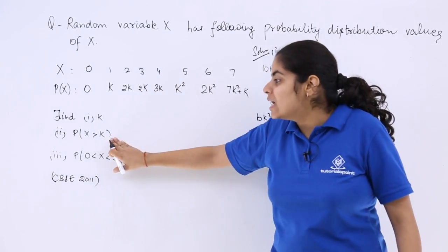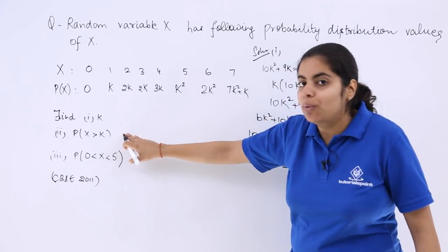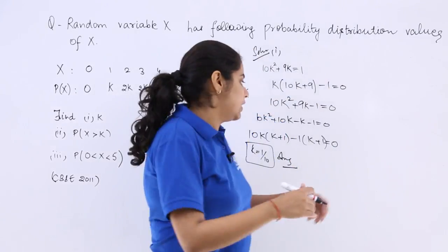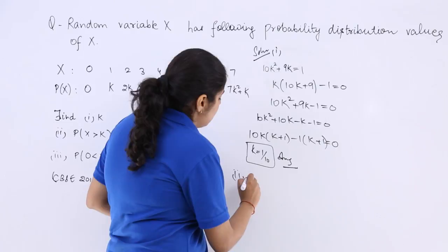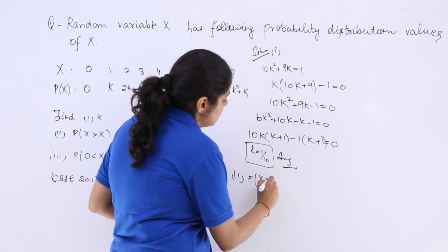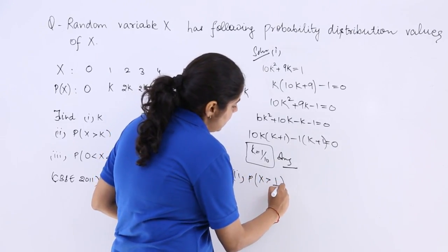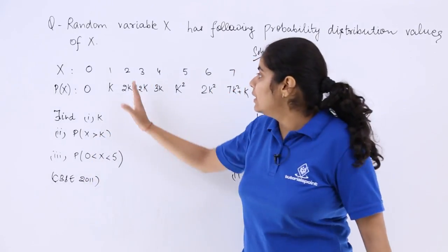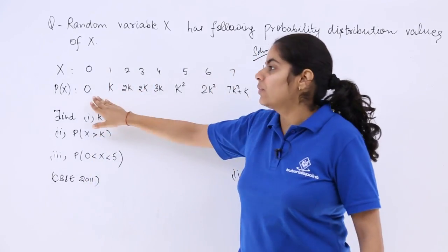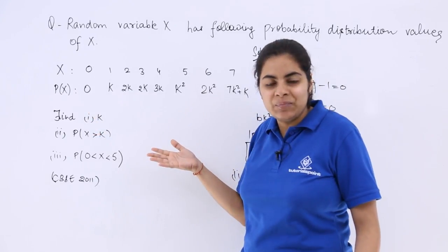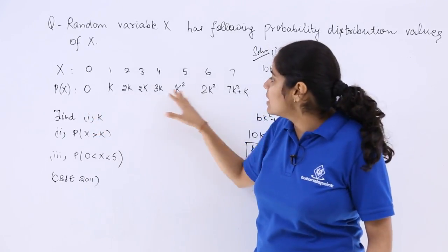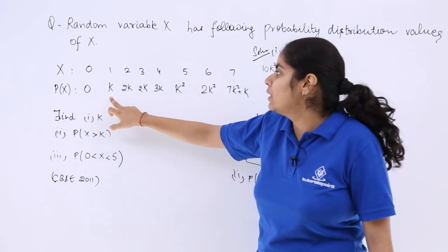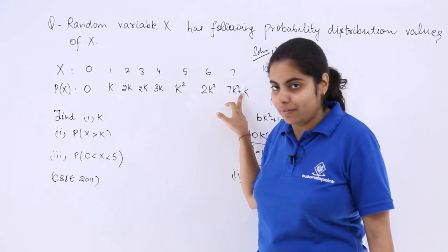Now the second part says find out the P or the probability X greater than k. So let's do the second part as well. P for X greater than 1 by 10. Now see 1 by 10 is 0 point something. So all these from 1 to 7 except the 0 fall into this category. So whatever is the resultant will come from all these values.